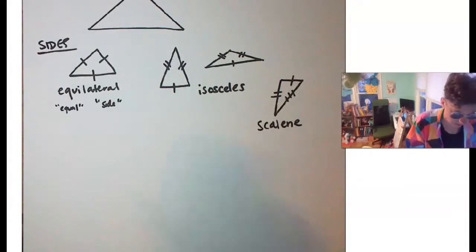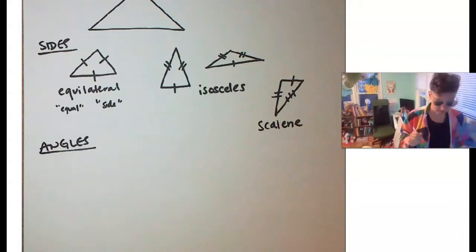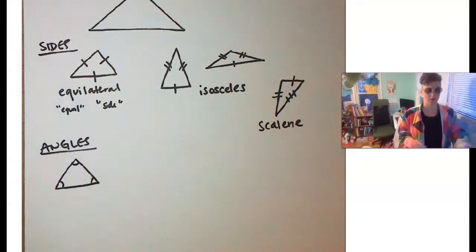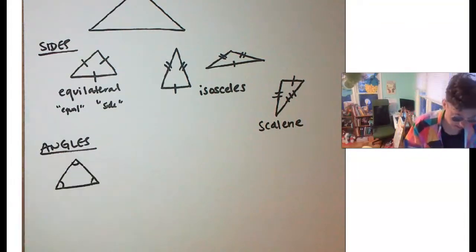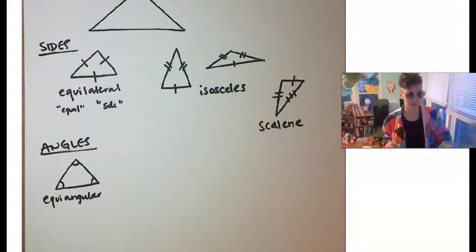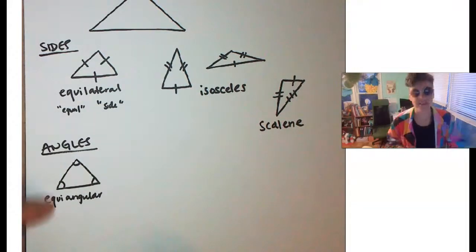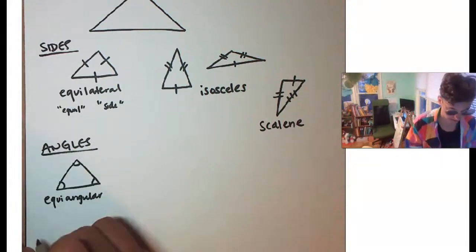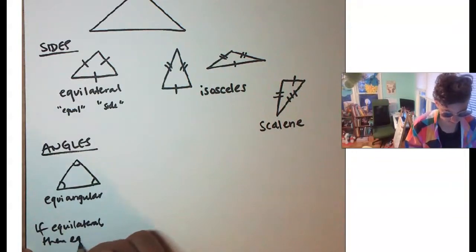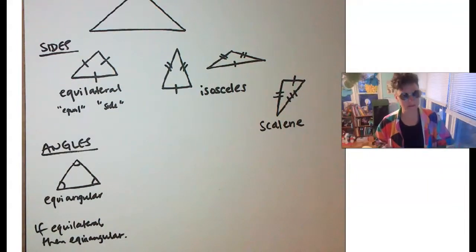We could have all of the angles be the same, as indicated by them all having the same number of arcs — this is called an equiangular triangle. All angles are equal to each other. It is true that if a triangle is equiangular then it will be equilateral, and vice versa — if equilateral, then equiangular. That will always be true.